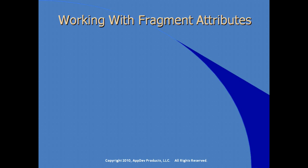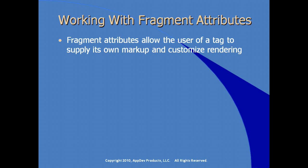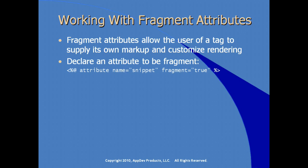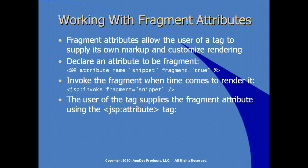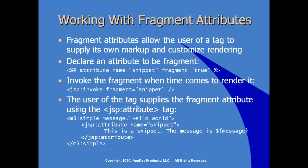Working with fragment attributes in a tag file: fragment attributes allow the user of a tag — the JSP developer — to supply their own markup and customize rendering, which is or should be their specialty. In order to declare an attribute to be a fragment, you use the attribute tag and set the fragment attribute to true. Then invoke the fragment when rendering by calling the JSP invoke method and specifying the name of the fragment. The JSP developer supplies the fragment attribute using the JSP attribute element, just as we saw when defining tags using TLD. The JSP code doesn't really change — it's how the tags are defined that changes, using tag files instead of Java files and TLD files.